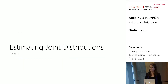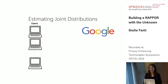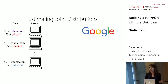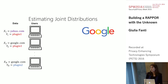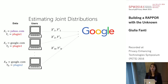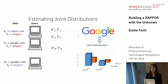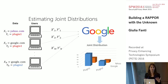Let's get started with part one: estimating joint distributions. The problem is you once again have users and the aggregator, but now the users might have multiple pieces of data — for example, a homepage and the last plugin each user installed. Each user is going to independently randomize both pieces of data using the RAPPOR mechanism and send those randomized reports to the aggregator. The aggregator then wants to apply some post-processing to these noisy reports and recover the joint distribution of both variables, or an arbitrary number of variables.